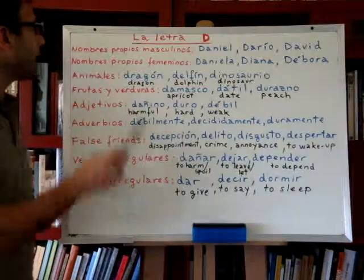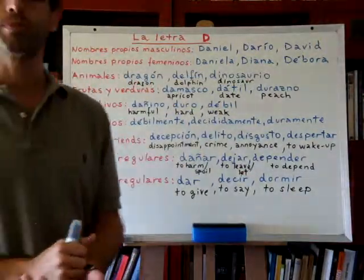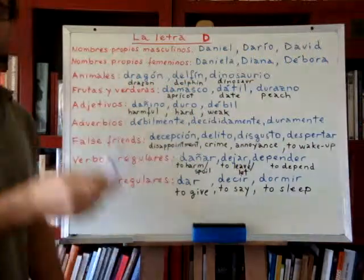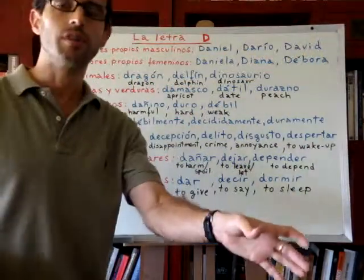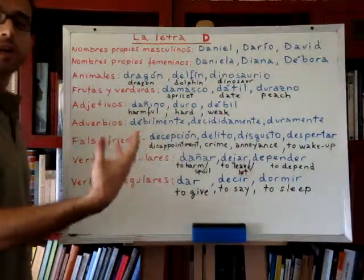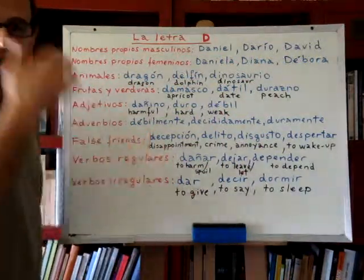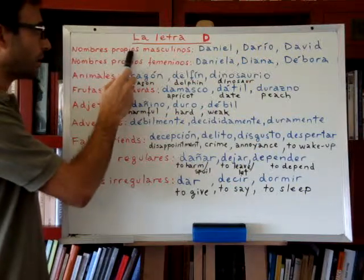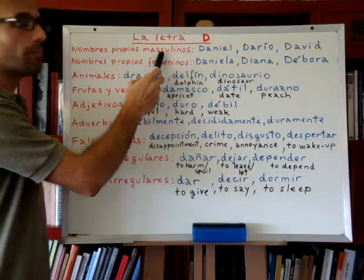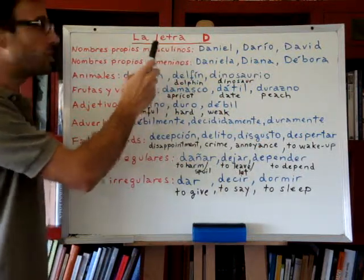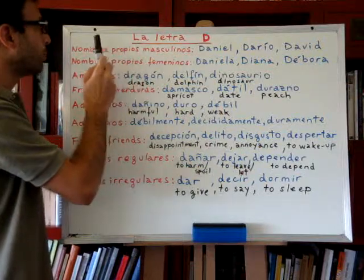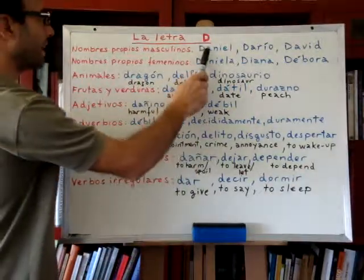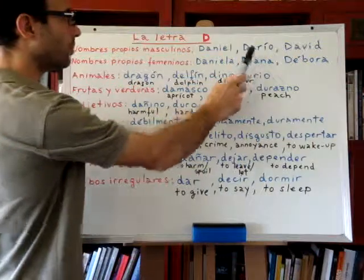Let's begin. We have nombres propios masculinos — masculine given names. Remember in Spanish, the noun always comes first and the description comes later. The more related the adjective is to the noun, the nearer it goes to the noun. So given names: Daniel, Darío, David.